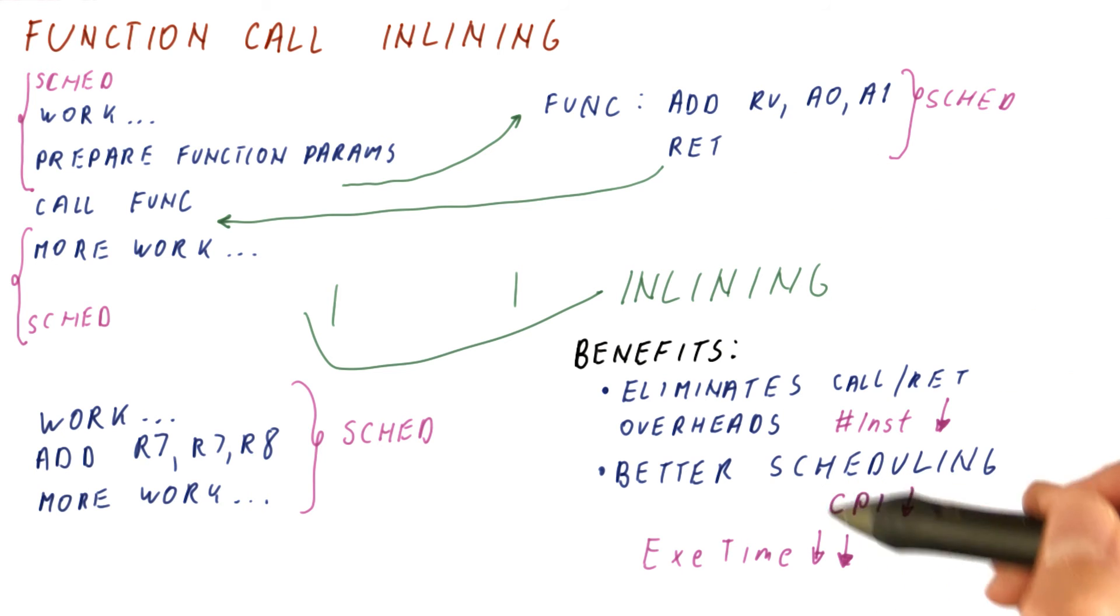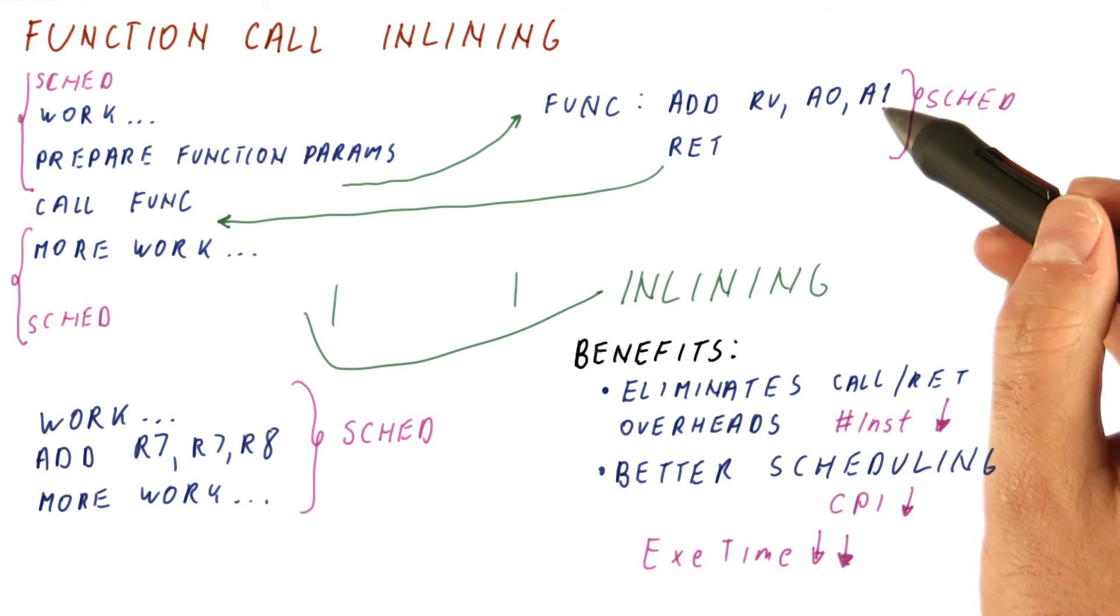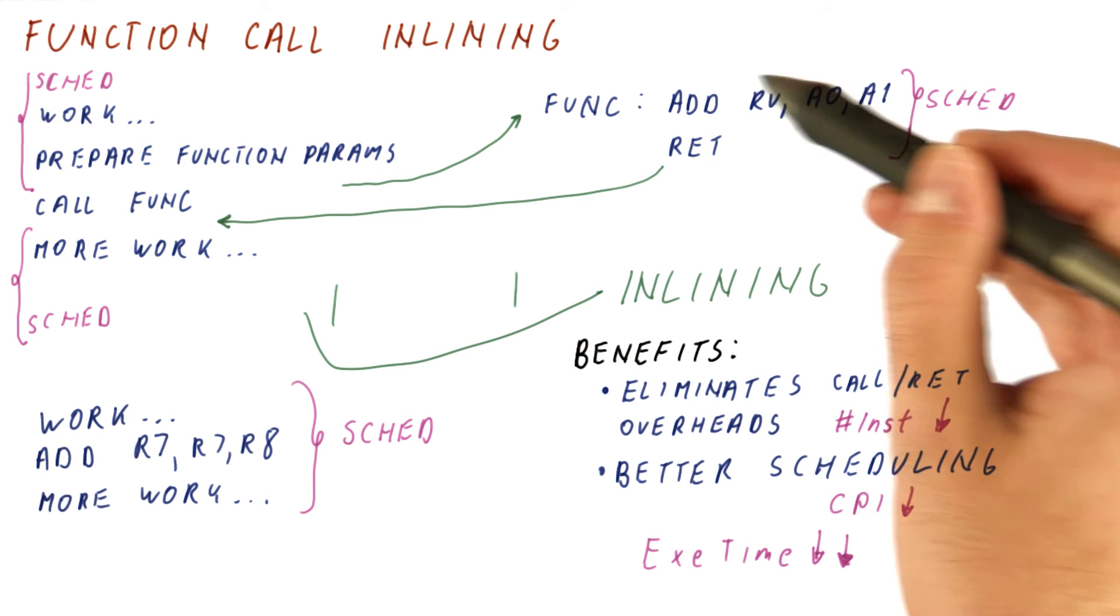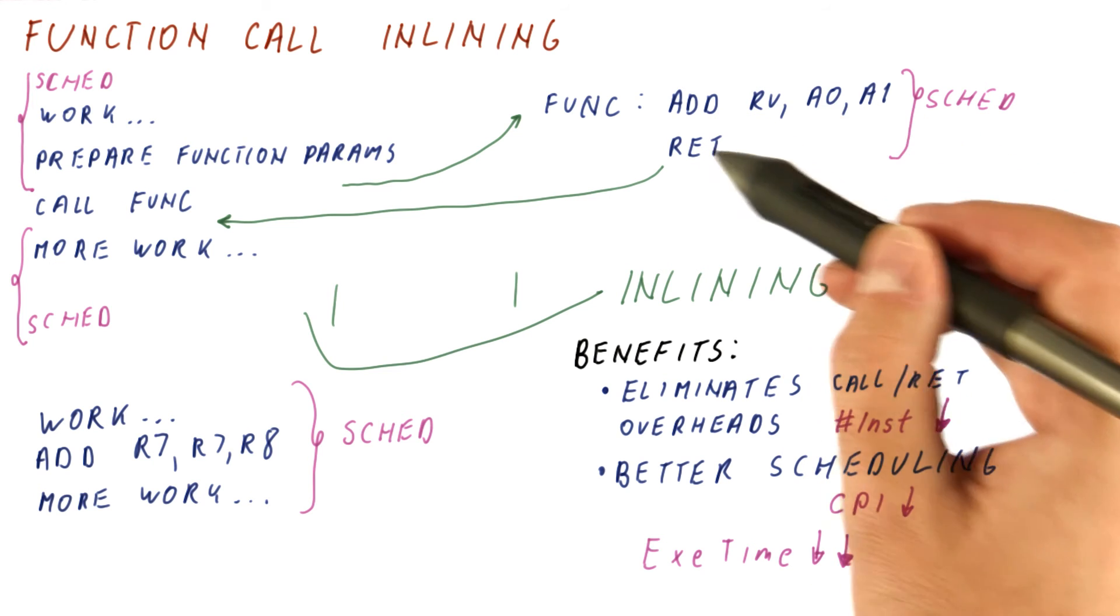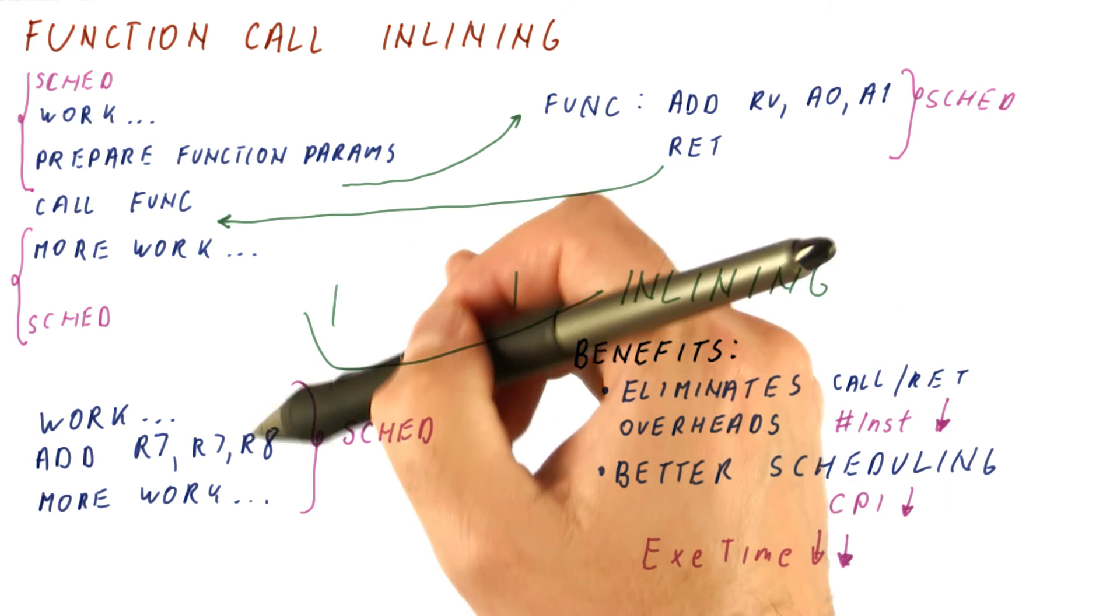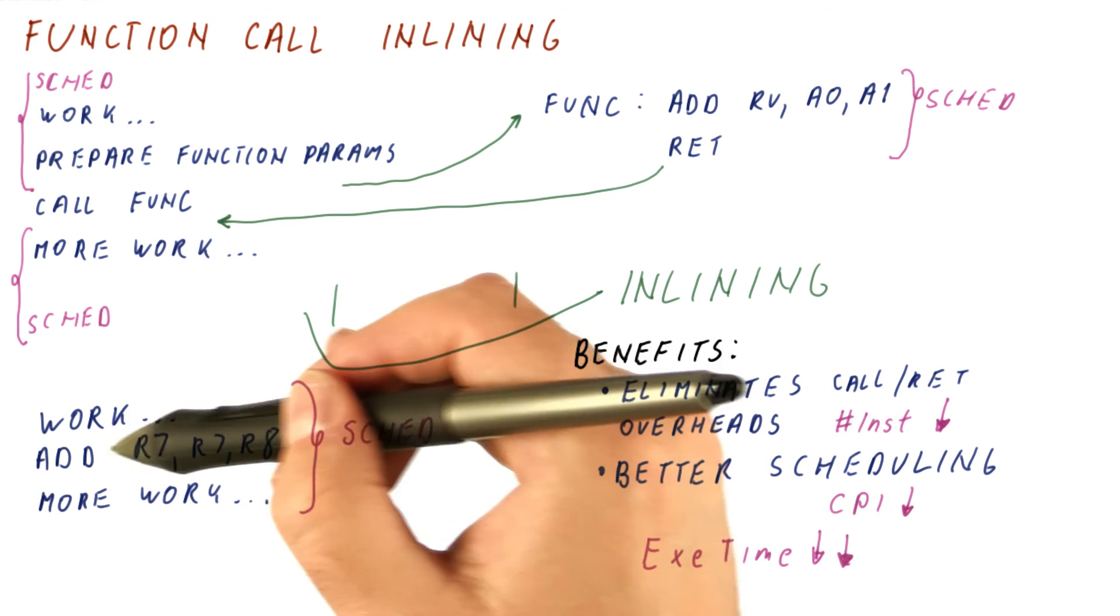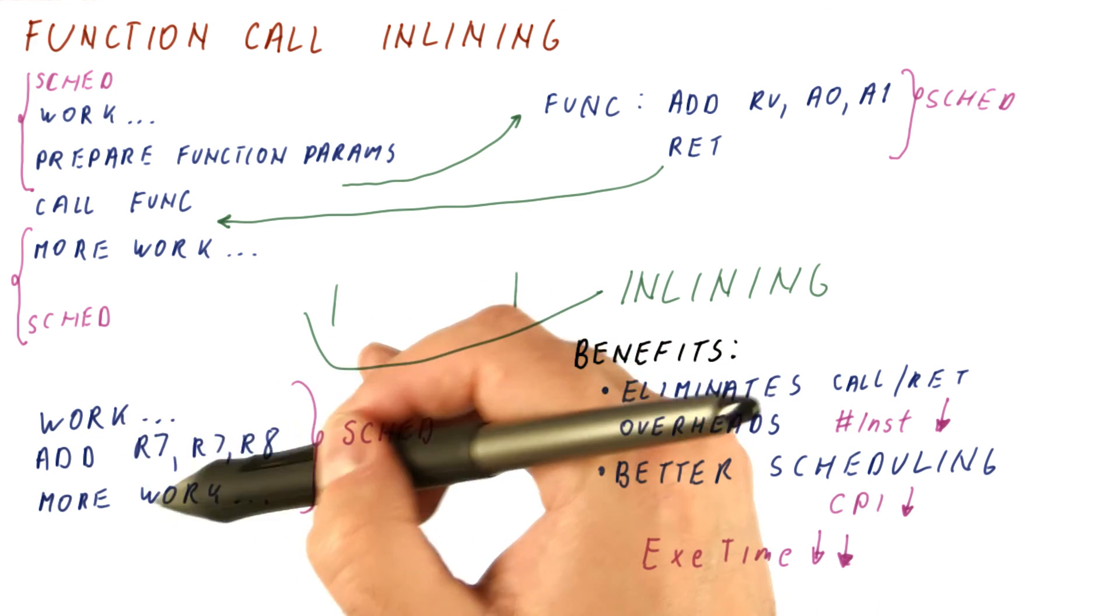The smaller the function, the more benefit from both of these. Because if the function is very small, the overheads of calling and returning are high relative to the work we are actually doing. And if the function is small, scheduling within the function is not going to do much. But if we put it into the existing code, suddenly this instruction here can probably be squeezed into an existing cycle without really adding another cycle.